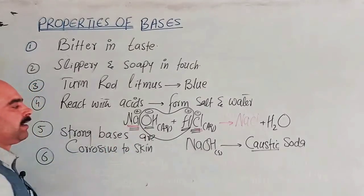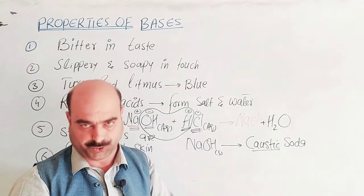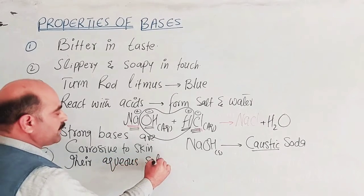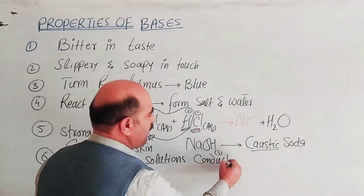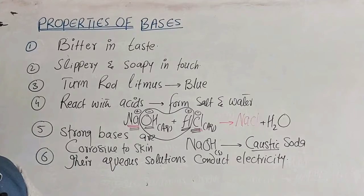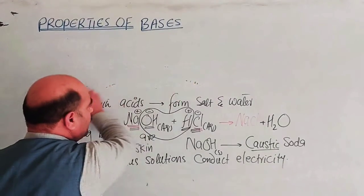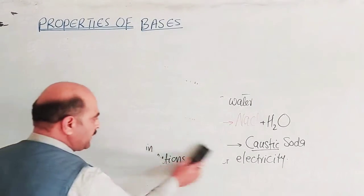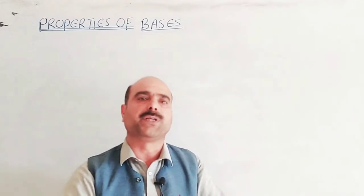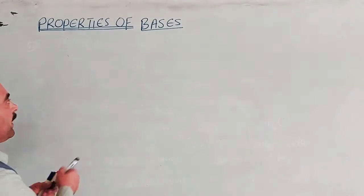Bases, like acids, ionize into positive and negative ions in aqueous solution. Their aqueous solutions conduct electricity because the movement of free ions allows electric current to pass. All these properties of bases are due to the hydroxide ions which bases provide in their aqueous solutions.